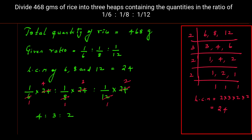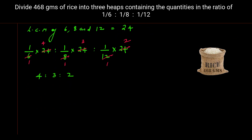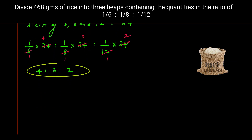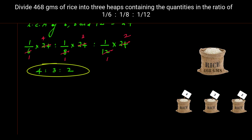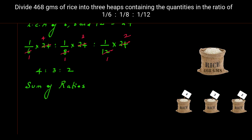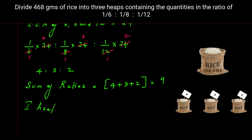This is the ratio in which the total quantity of rice needs to be divided. The next step is to find the sum of ratios: 4 + 3 + 2 = 9. To find the first heap, take ratio 4 divided by sum 9, multiplied by 468 grams. Simplifying: 468 ÷ 9 = 52, so 52 × 4 = 208 grams.